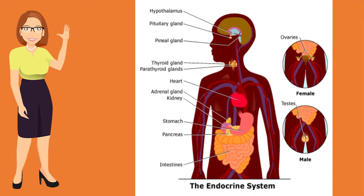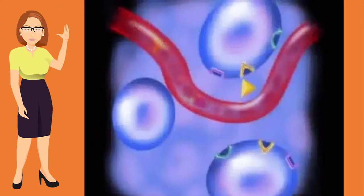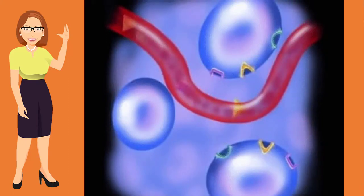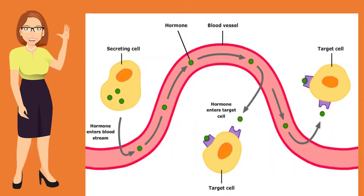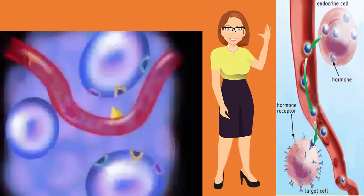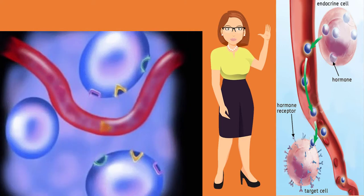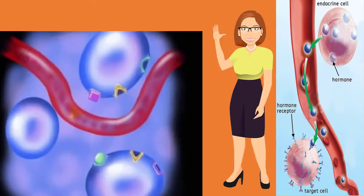Endocrine glands are the glands that secrete chemical substances into the bloodstream or tissue of the body. They are ductless — that is, they do not pass through any duct before releasing chemical substances, also known as hormones, directly into the bloodstream. Hormones are messengers responsible for telling parts of the body to perform or cease some activity.